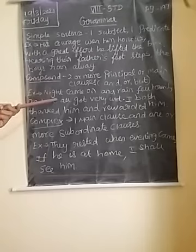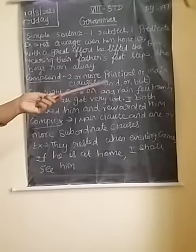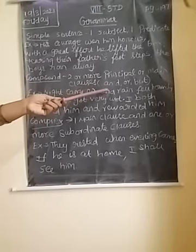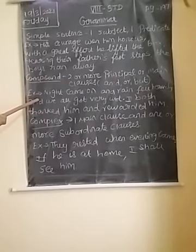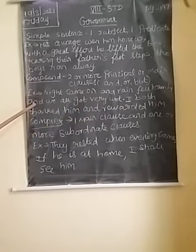Compound sentence. A compound sentence is one made up of two or more principal or main clauses. An easy thing to remember is that in those sentences, 'and', 'or', or 'but' will be there. For example: Night came on and rain fell heavily and we all got very wet. If you separate the sentences, each part also gives meaning. So, obviously, this is a compound sentence.